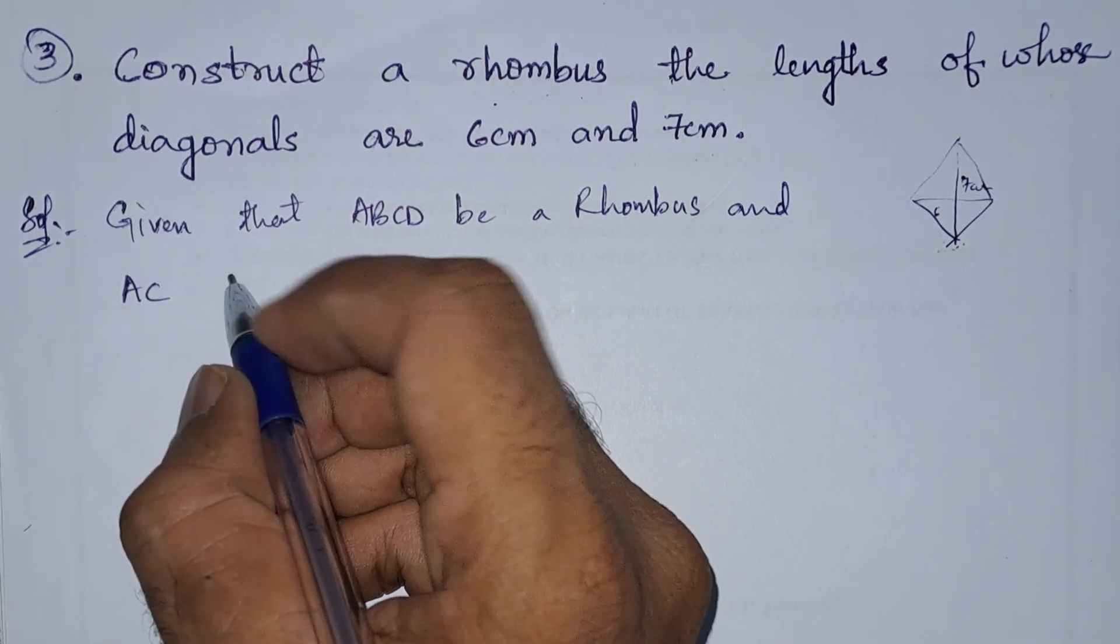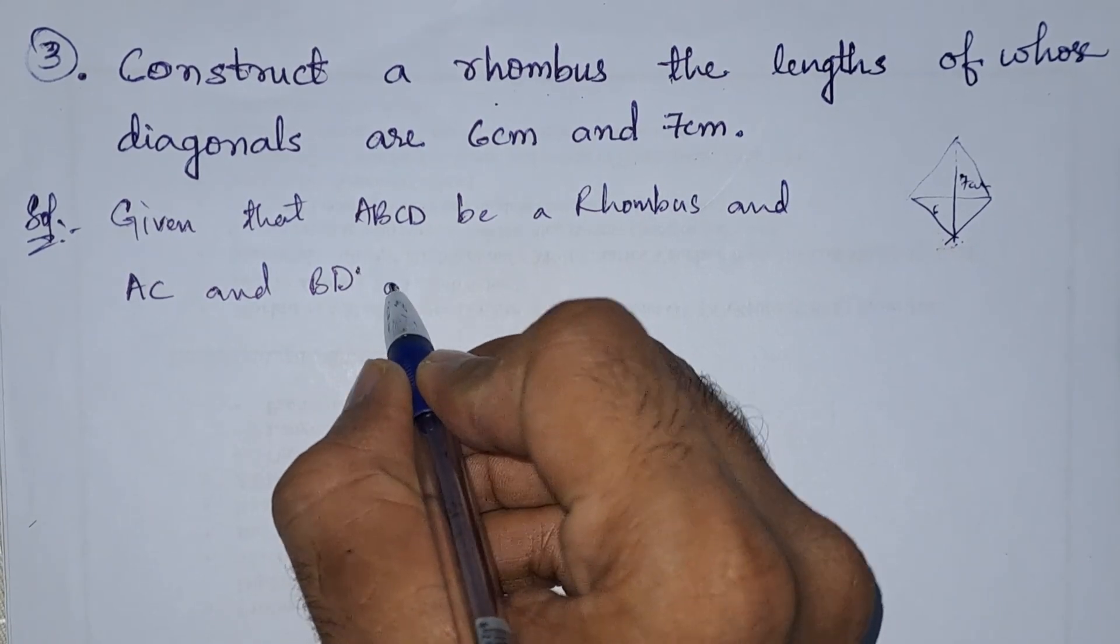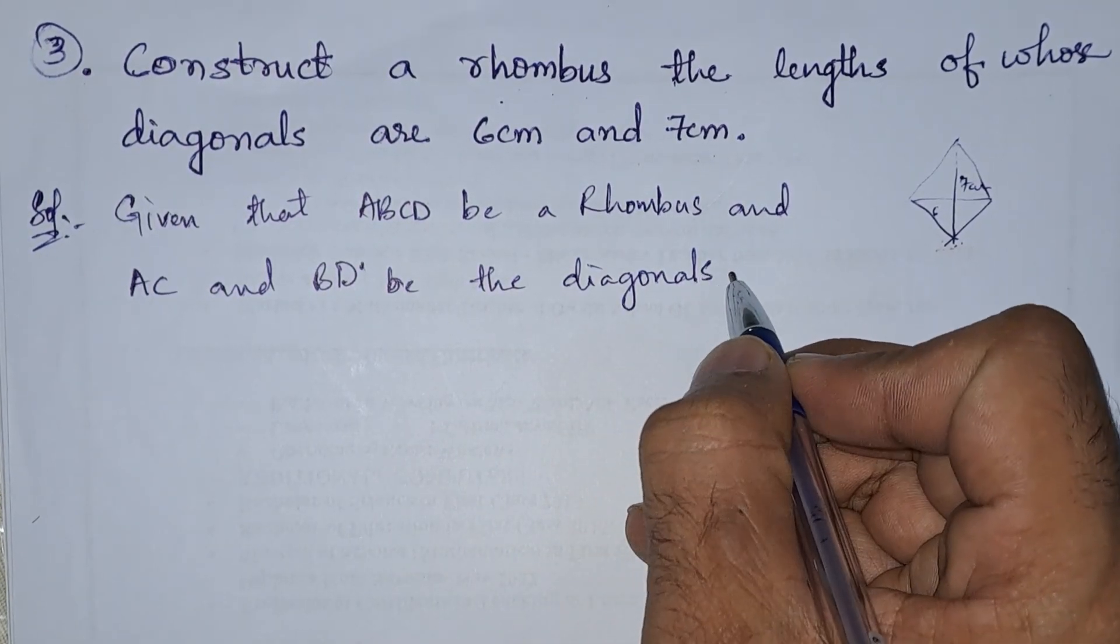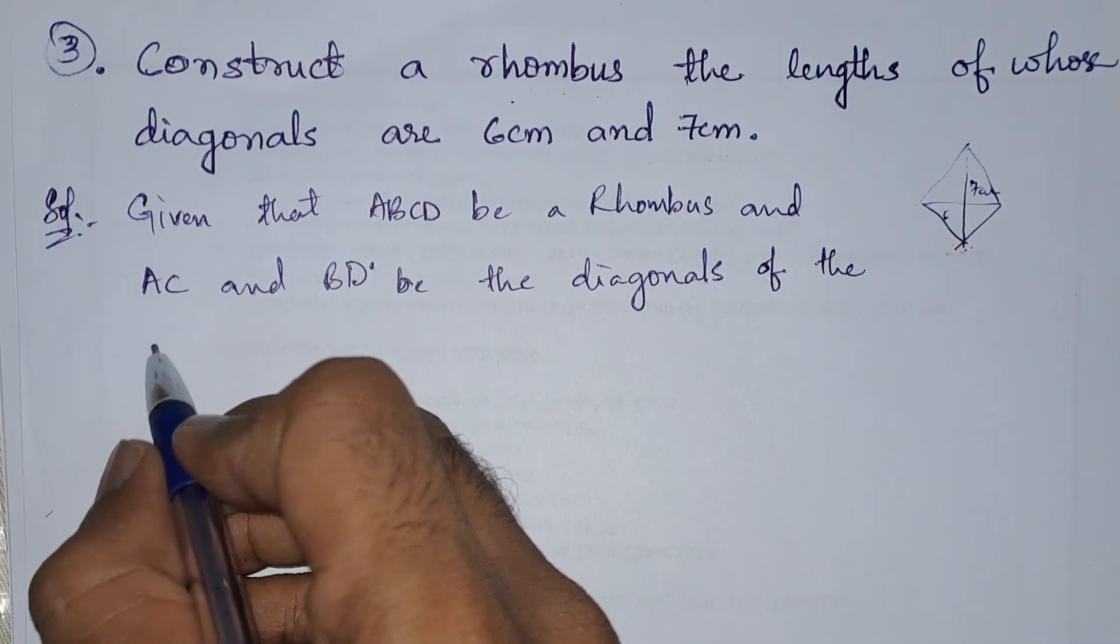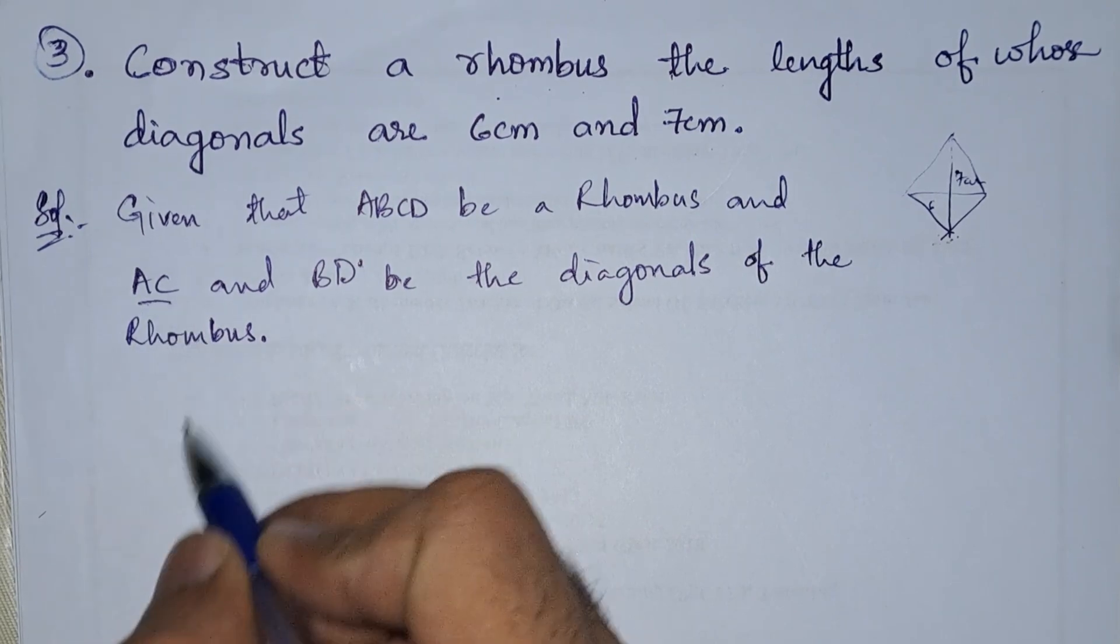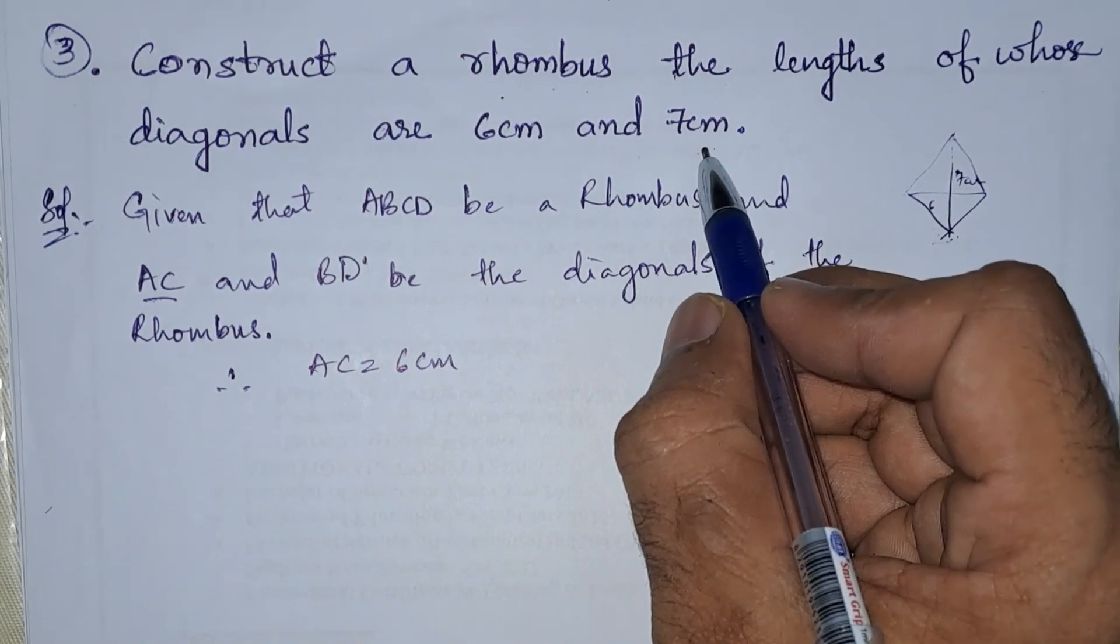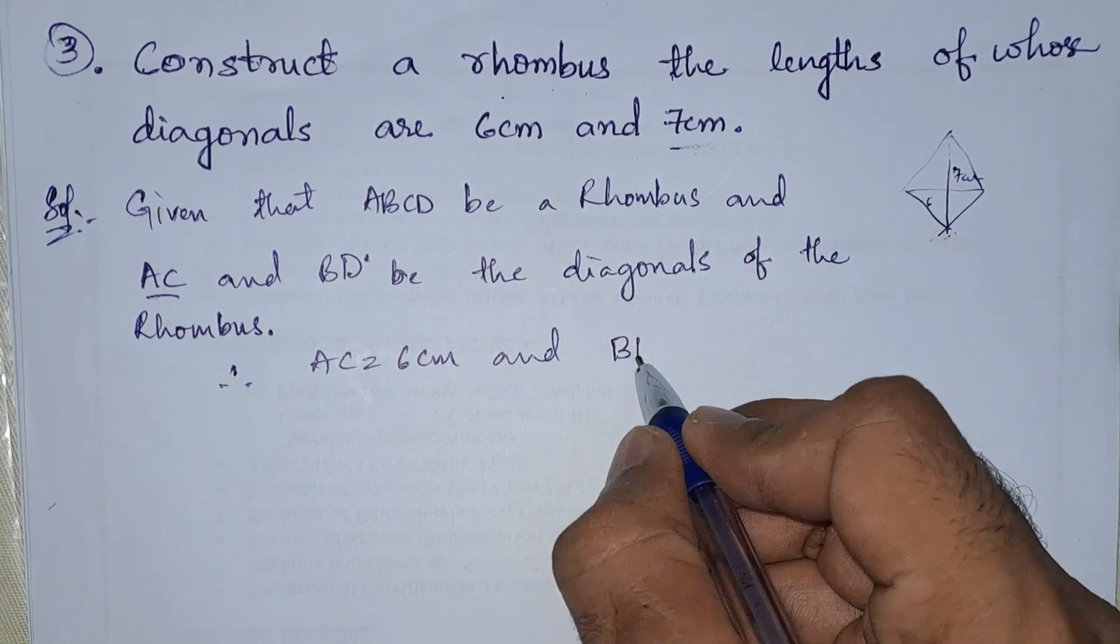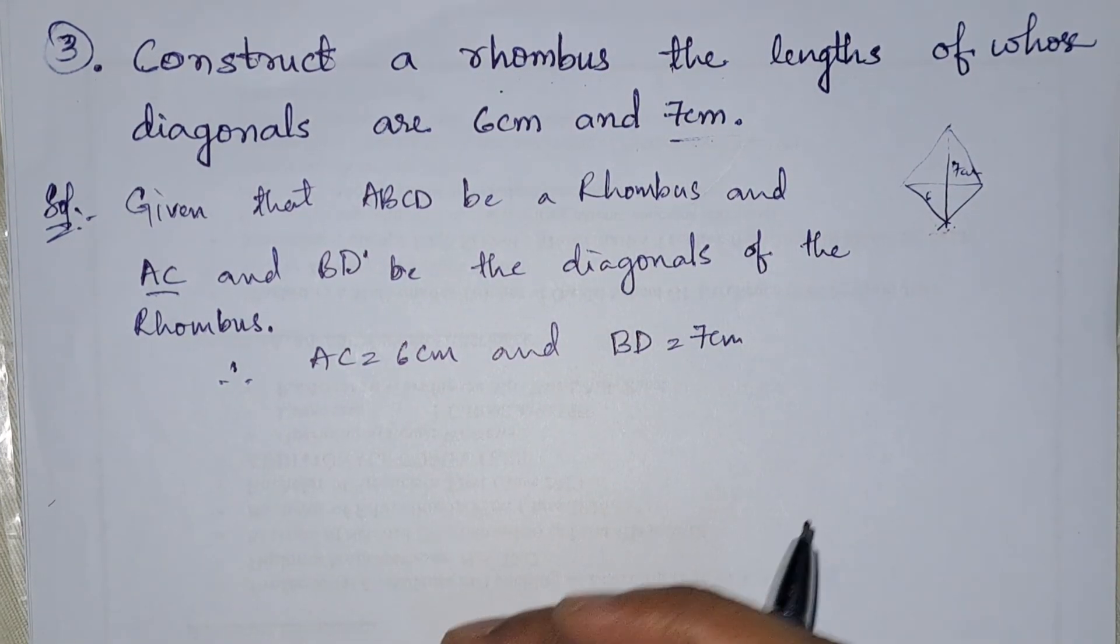And the diagonals AC and BD be the diagonals of the rhombus. So let us take AC is equal to 6 centimeters, and BD is equal to 7 centimeters.